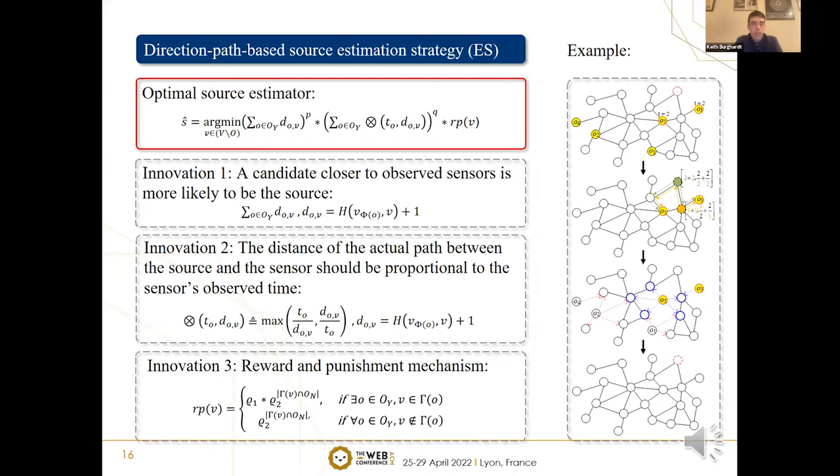Then, I'd like to introduce the source estimation part of GFNL-ES. We propose a source estimator to infer the source. This estimator has three innovations. First, due to the greedy network coverage of DS, a candidate closer to observed sensors is more likely to be the source. Second, the distance of the actual path between the source and the sensor should be proportional to the observed time when such a sensor observes a propagation. Third, the reward and punishment mechanism of ES further modifies the probability of each candidate being the source. Since the estimation candidate having a large score would be punished by the estimator, the candidate with the lowest score in the end is the predicted source.